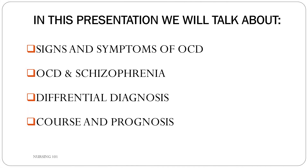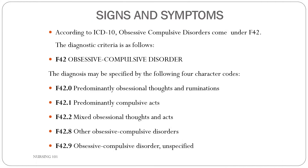In this presentation we will talk about the signs and symptoms of OCD, OCD and schizophrenia, the differential diagnosis, and the course and prognosis of OCD. Beginning with signs and symptoms of OCD — according to ICD-10, obsessive-compulsive disorder falls under F42. The diagnosis may be specified by four-character codes. So the broad diagnosis is obsessive-compulsive disorder, and there are certain character codes by which you can specify what kind of OCD it is.